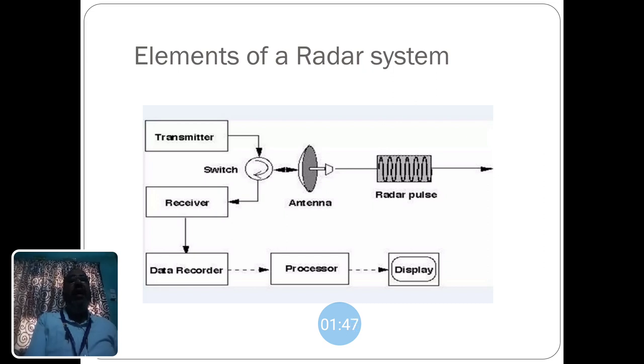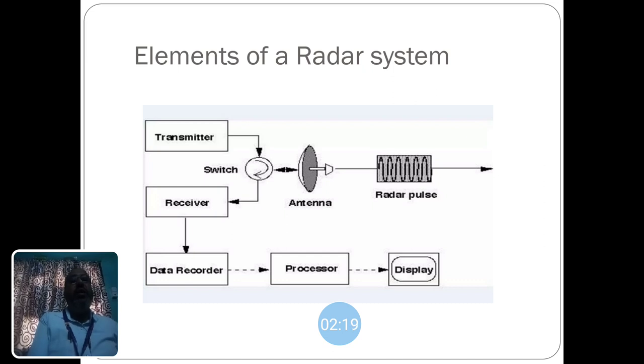The elements of a radar system. The radar pulses are transmitted through the antenna and when the source is hit it is reflected back from the source and received. The time between the transmitter and receiver is recorded and processed, and it can be displayed from the display unit.